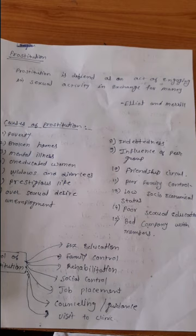Next is the control of prostitution — what we can do for the control of prostitution. The first one is sex education: providing sex education to women so that prostitution may be prevented.